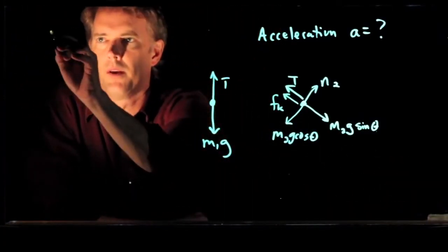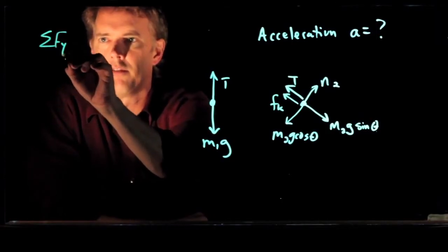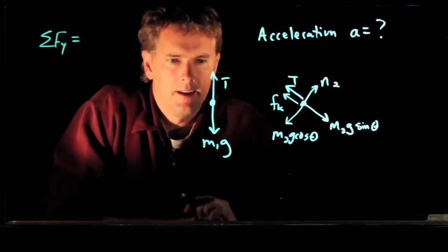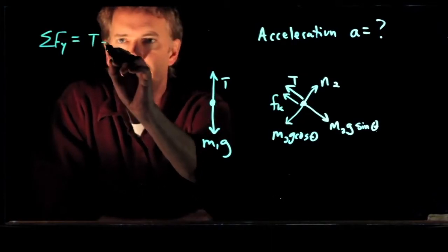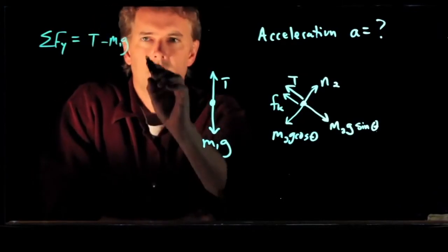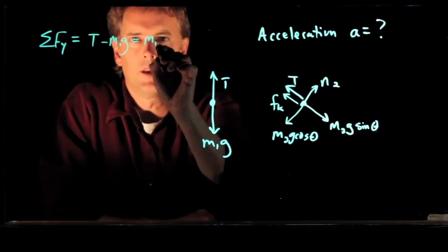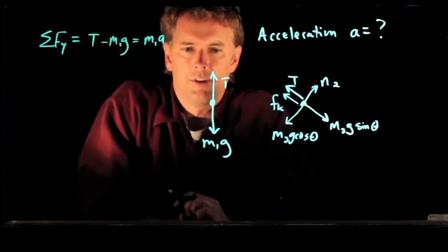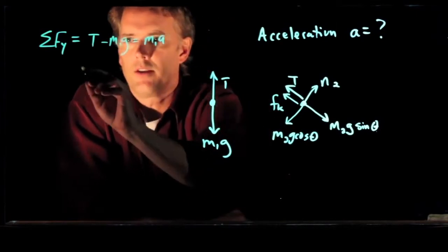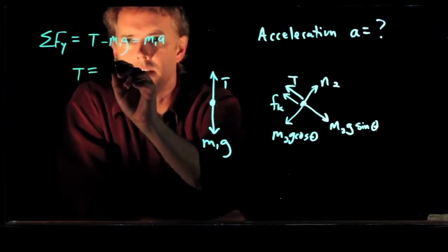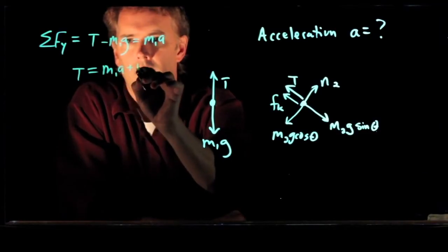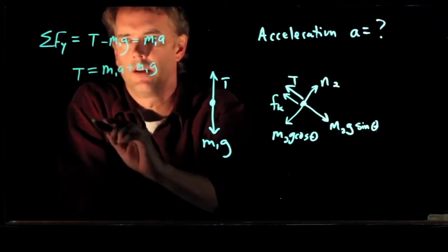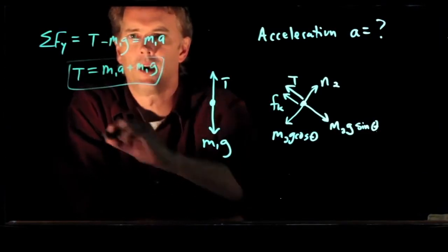All right, let's look at particle number one. Sum of the forces, it's all in the y direction for that guy. And it's equal to tension going up minus M1g going down. And all that is going to be equal to the mass times the acceleration. And so now you can write the tension, T. Tension T, according to this equation, is just M1A plus M1g. All right, we like that one. We'll put a box around it.